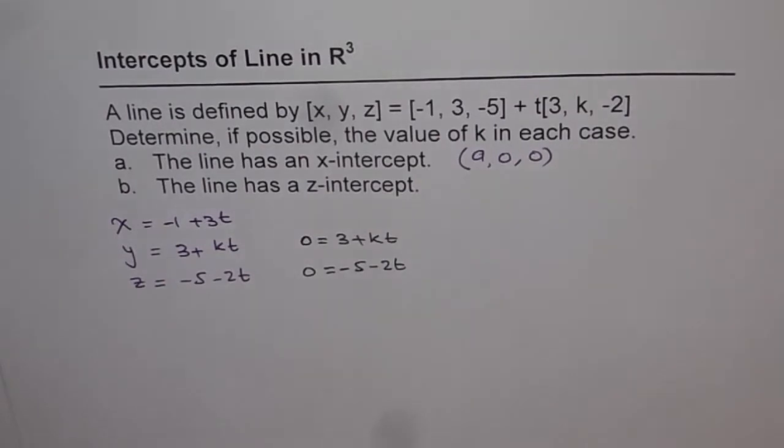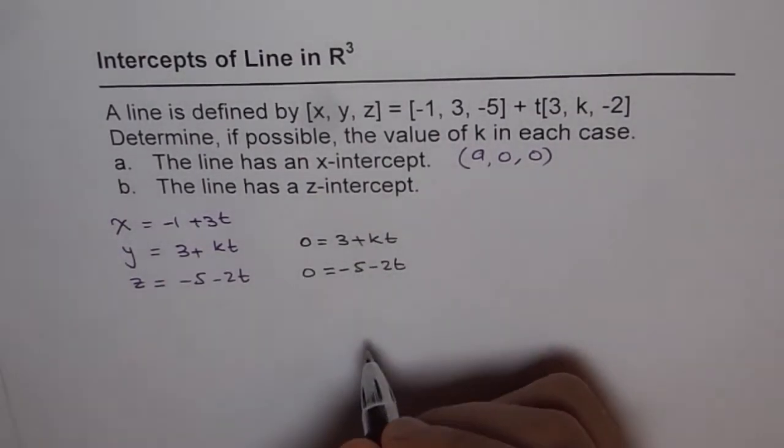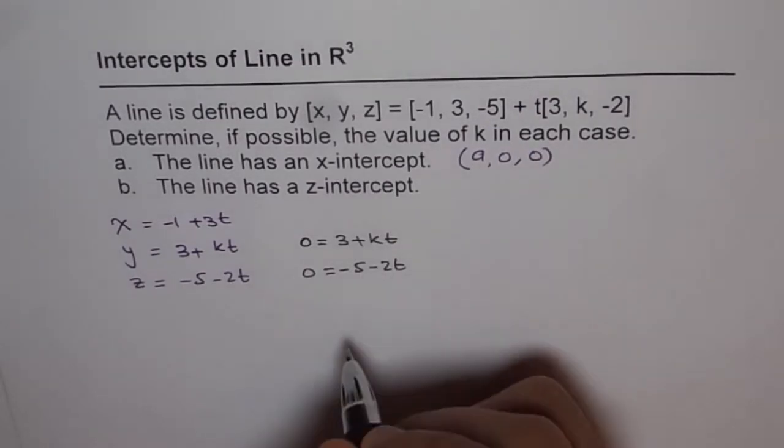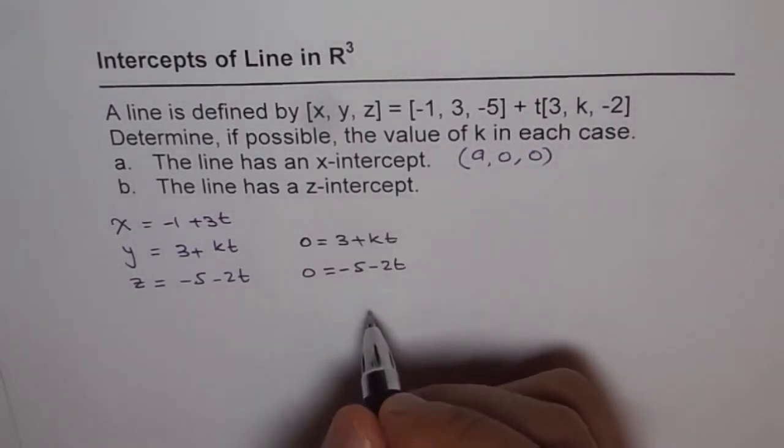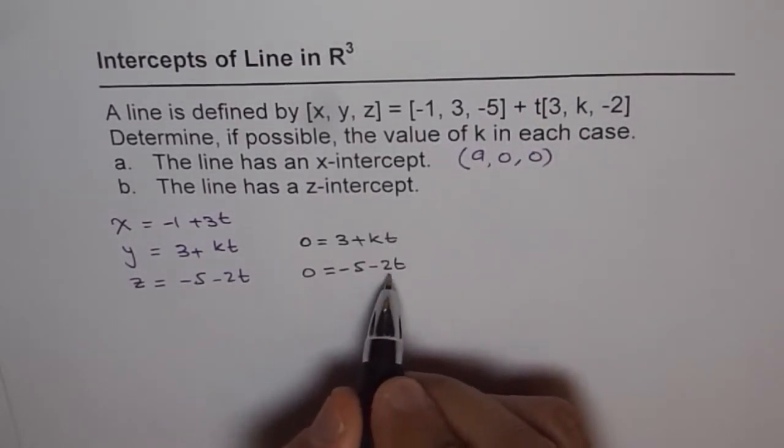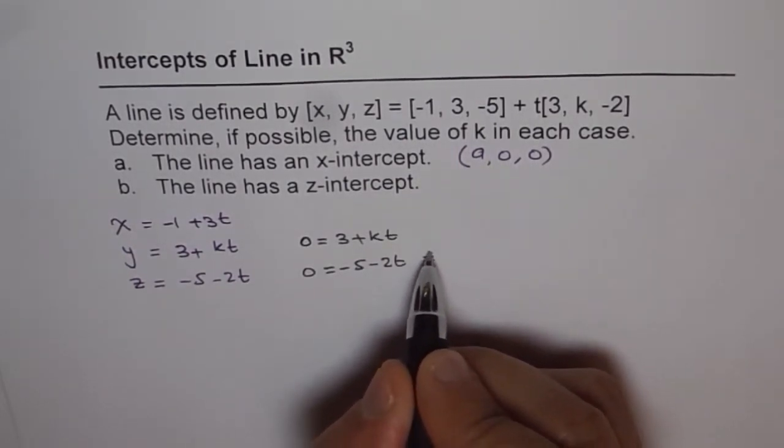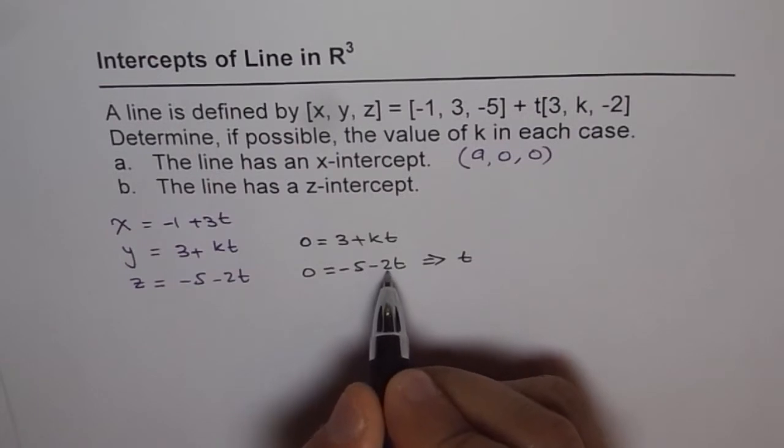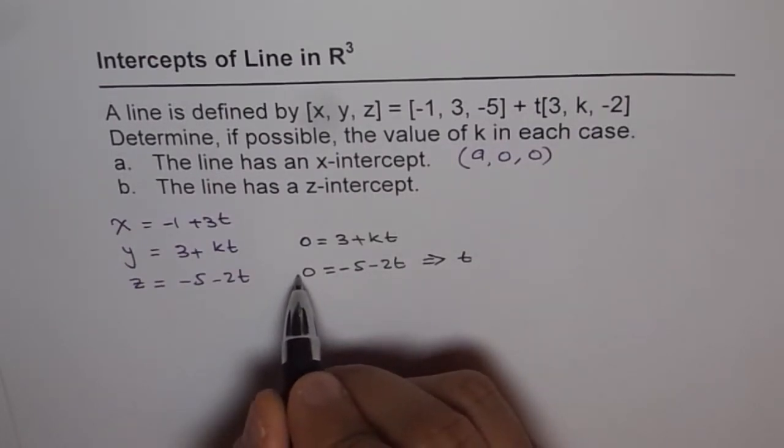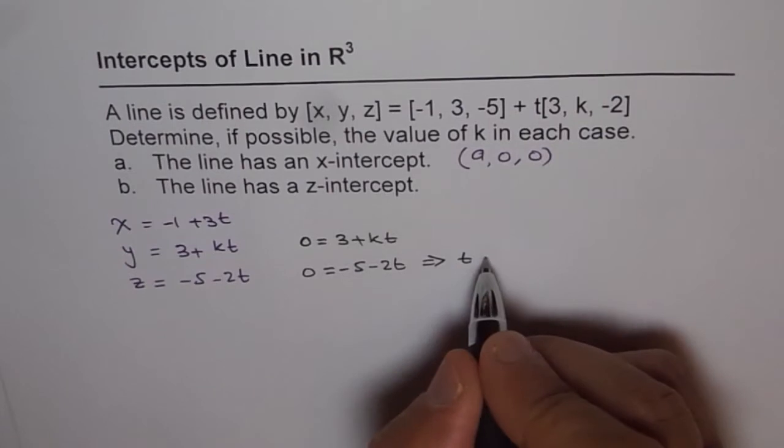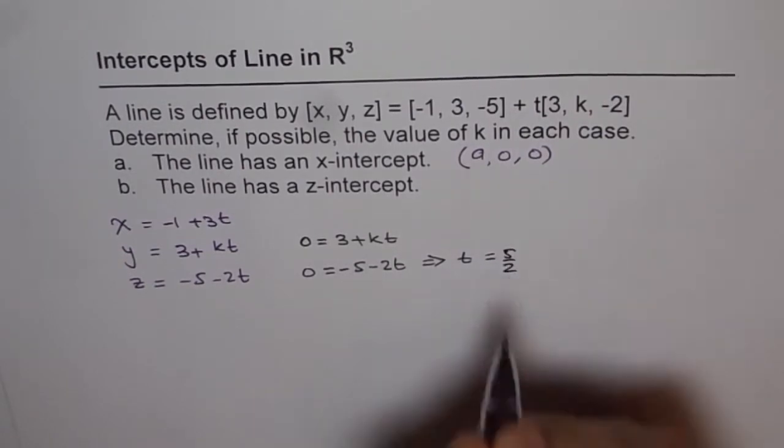So now we have two equations. And from two equations, we can always get our unknowns. There are two unknowns and two equations. So from the second equation, we can find what t is. From this equation, we know t should equal... we will take 2t on this side. And so t = -5/2.